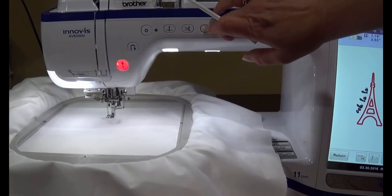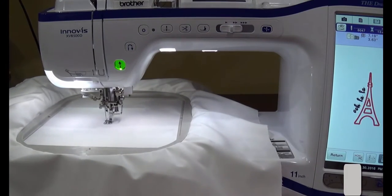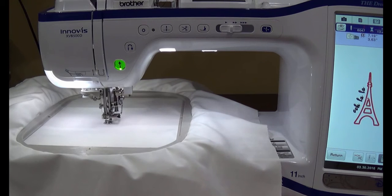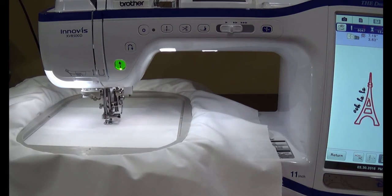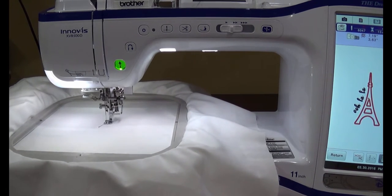Put the foot down on the machine and then press Start. The first segment of the applique will stitch. This is the placement stitch.